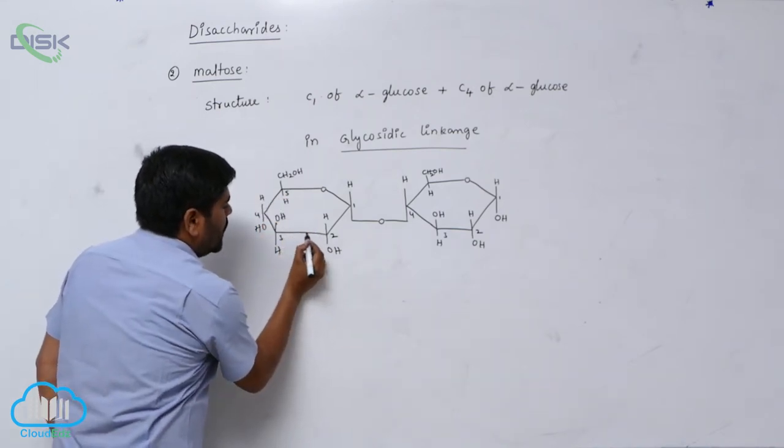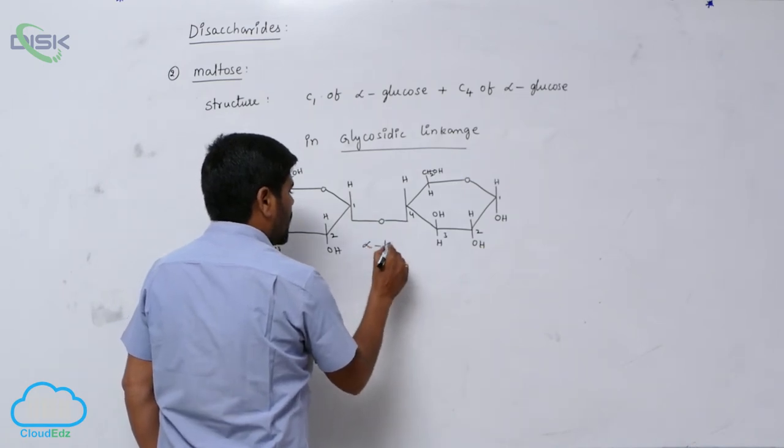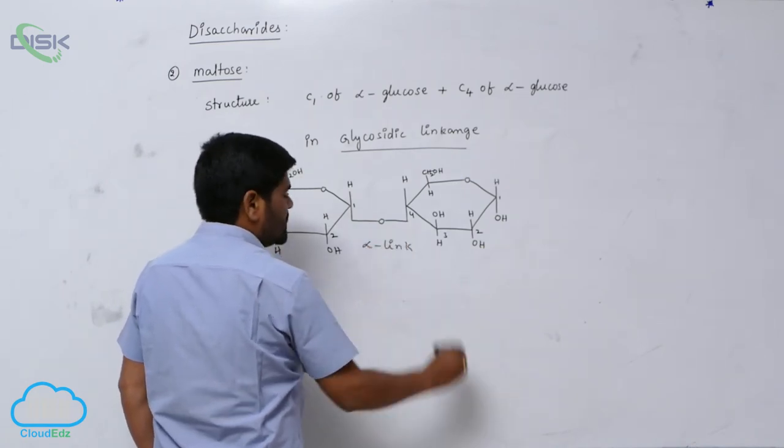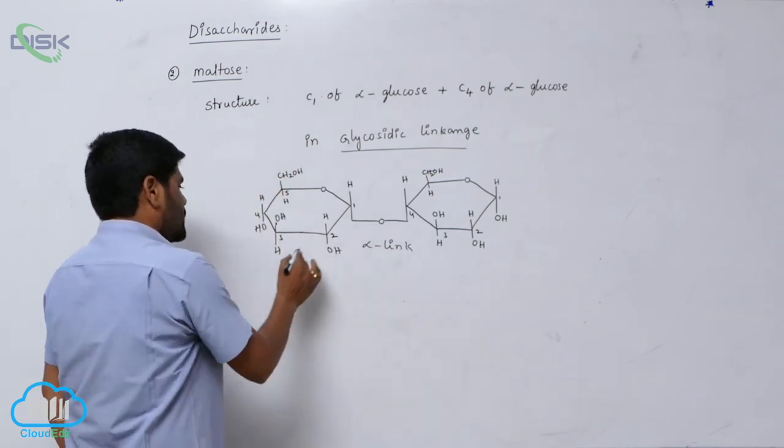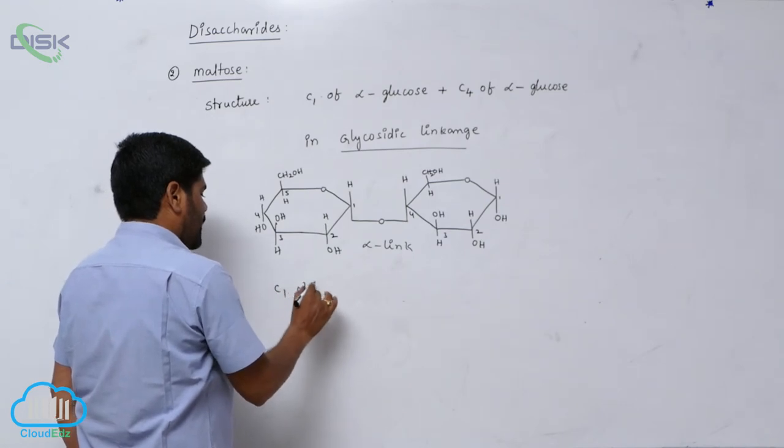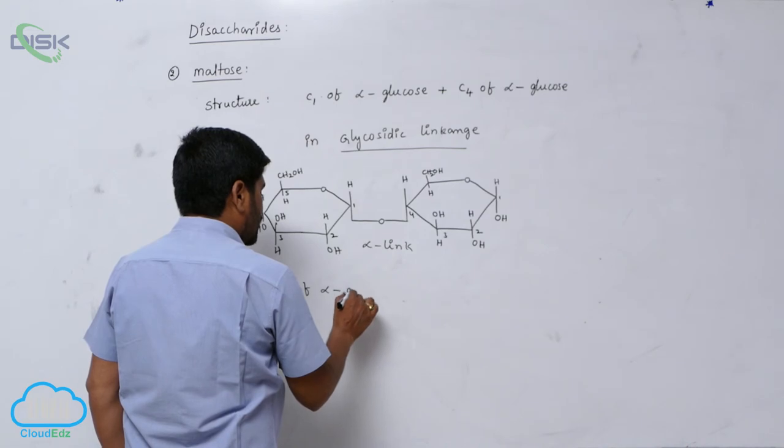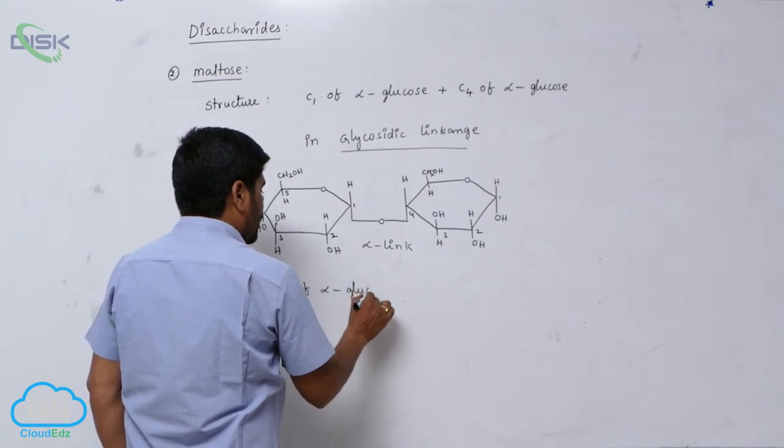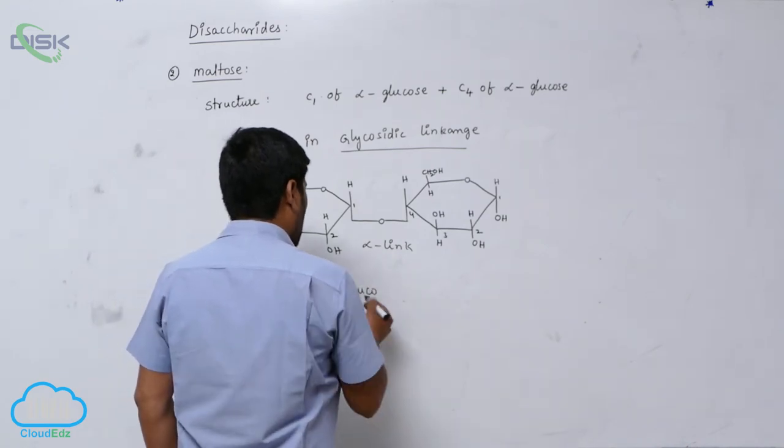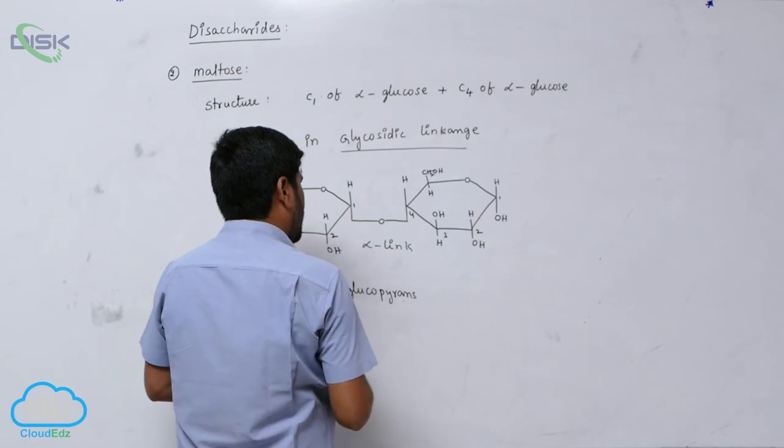Now here which linkage? Alpha linkage. It is alpha link between C1 of alpha D-glucopyranose.